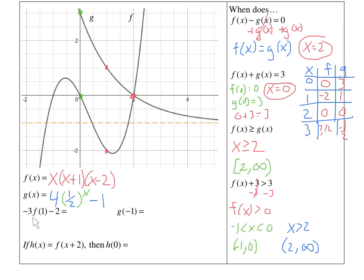If I want to find this expression, it's saying take negative 3, multiply it by f of 1, and subtract 2. The first thing you need to do is find f of 1. So can you go to function f? At 1, what is f of 1? Negative 2. At x is 1, f is negative 2. So I'm going to replace f of 1 with negative 2. Negative 3 times negative 2 is 6. Minus 2 is 4. So my answer to this one is 4.